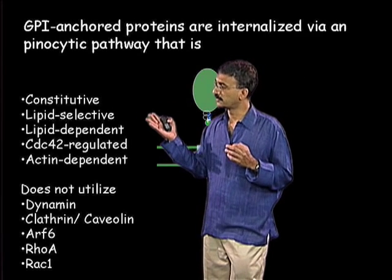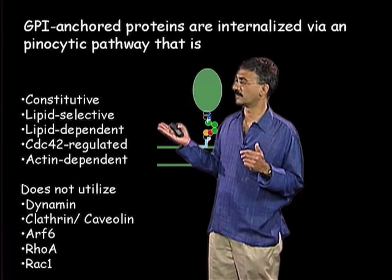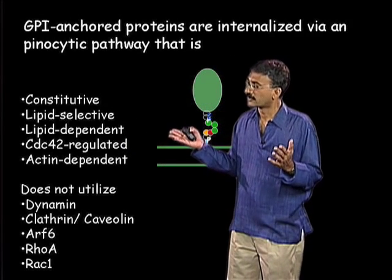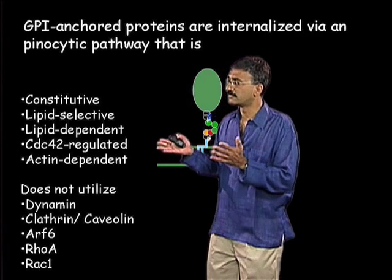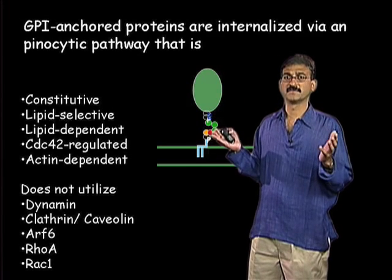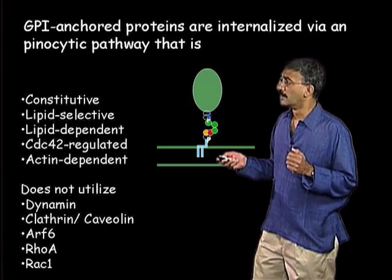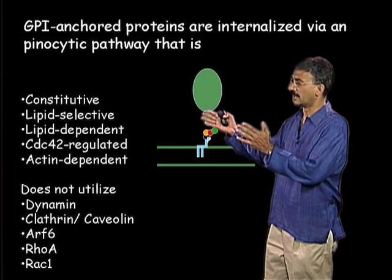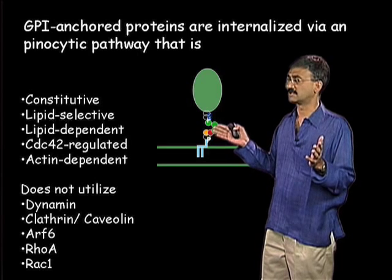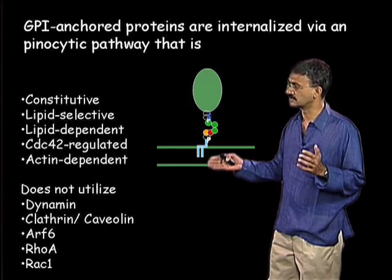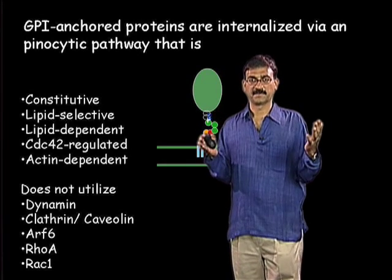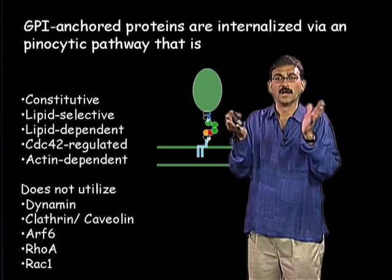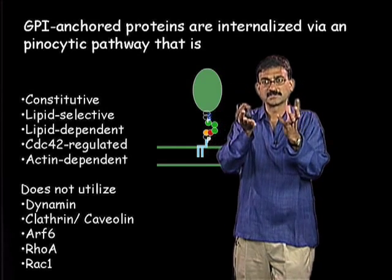This pinocytic pathway, which brings fluid into the cell, does not require components necessary for clathrin and dynamin-dependent endocytosis. Instead, it is lipid-selective, lipid-dependent, requires small GTPases, and is very sensitive to perturbations of the actin cytoskeleton. The fact that GPI-anchored proteins are sorted into a specialized endocytic pathway while lacking any cytoplasmic extension tells us these components must be segregated in the plane of the membrane to form domains where they can be selectively endocytosed.